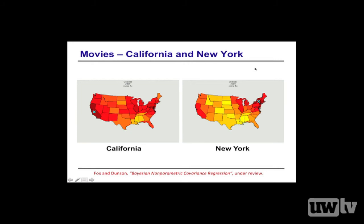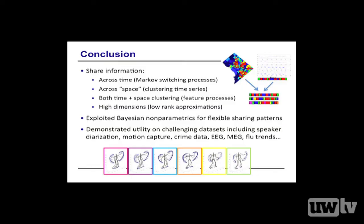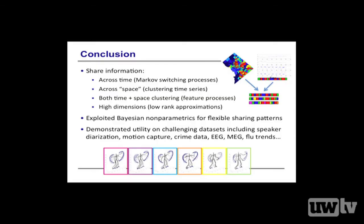To wrap up: in this talk we looked at sharing information within time series — across time using Markov switching processes, across space using clustering of different time series, space-time clustering using feature-based processes, and scaling to high-dimensional time series with changing correlations using low-rank approximations. In all methods, we exploited Bayesian nonparametrics to develop flexible sharing patterns and flexible dynamics. We demonstrated utility on speaker diarization, motion capture analysis, crime data, EEG, MEG, flu trends, and others. Thank you.